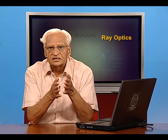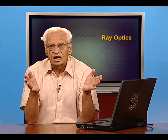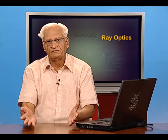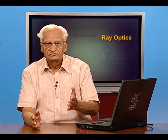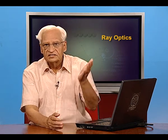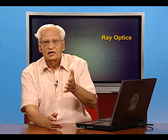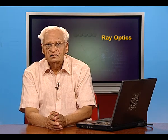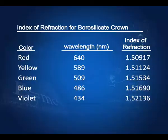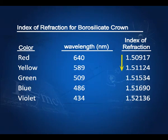White light consists of several colors — seven prominent colors — and these colors are actually different wavelengths. So the refractive index of glass or any other medium is different for different wavelengths. Since the refractive index is different, the velocity of light through these media is also different for different wavelengths. Look at this table: it has the colors red, yellow, green, blue, and violet with wavelengths 640 nanometers, 589, 509, etc., and the corresponding index of refraction. The index of refraction increases as we go from red to violet.